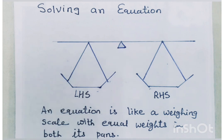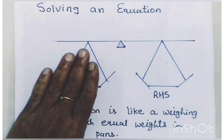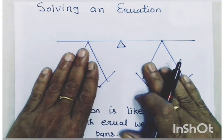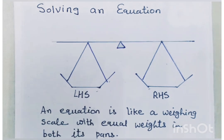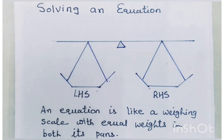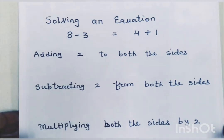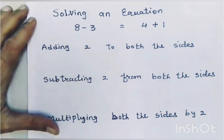I will explain how to solve an equation. You all must have seen the weighing scale. In a weighing scale, we put weights in one pan and things to be weighed in another pan — there are two pans. An equation is also like that. We have two sides: left hand side and right hand side. An equation is like a weighing scale with equal weights in both its pans. Let us understand this by one example.